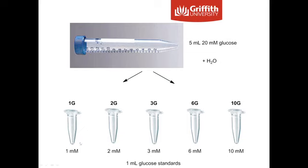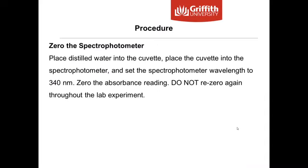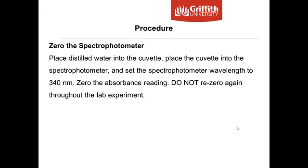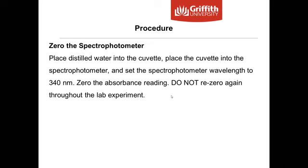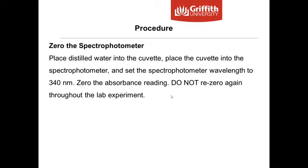So when making up your standards, your 1G tube should contain 1000 microlitres of glucose at 1 millimolar, 1000 microlitres at 2 millimolar, 3 millimolar, 6 millimolar, and 10 millimolar. You'll be able to prepare those when you come into the lab. You'll then zero the spectrophotometer — this sets a baseline reading, similar to taring a balance before weighing. Place distilled water in the cuvette and zero it. You only need to zero it once; subsequent measurements use a different button to take a reading.